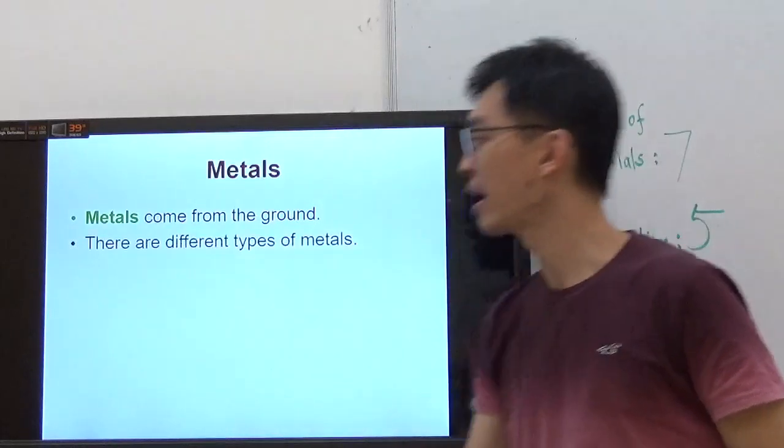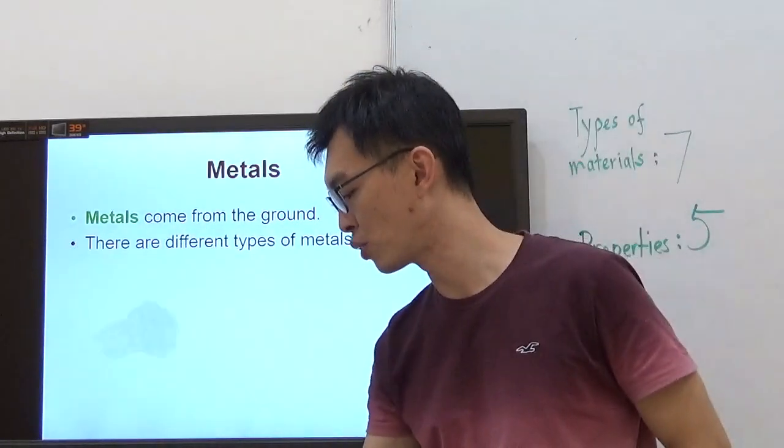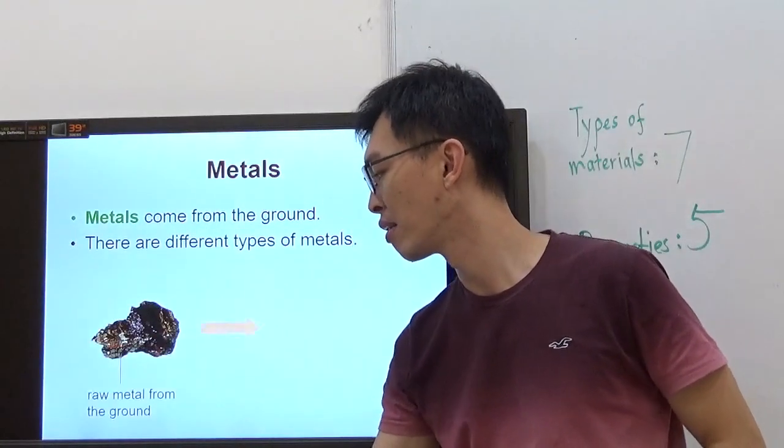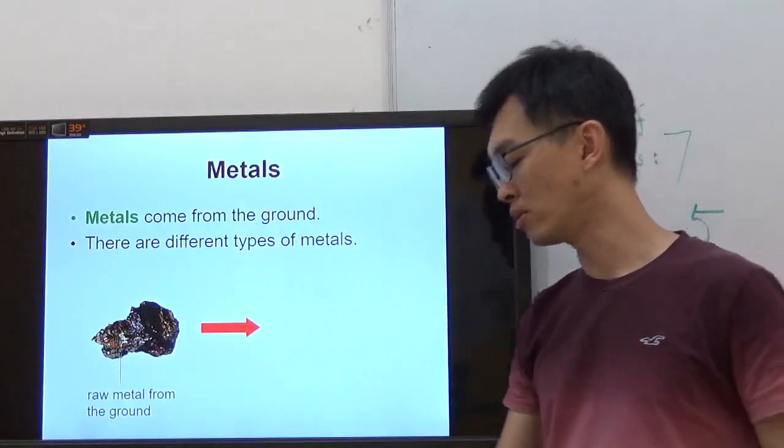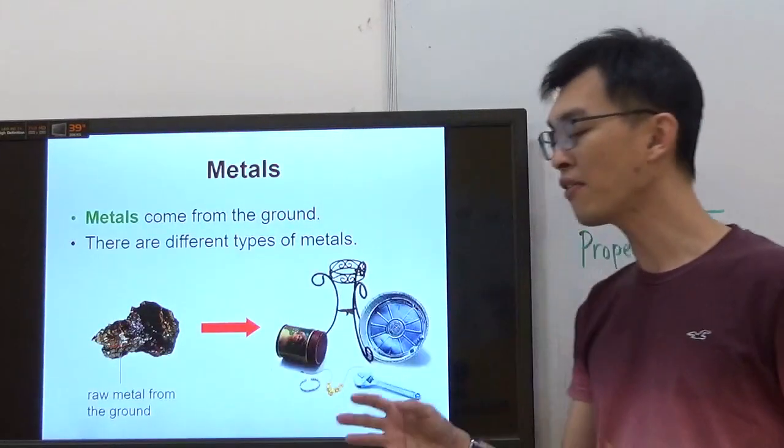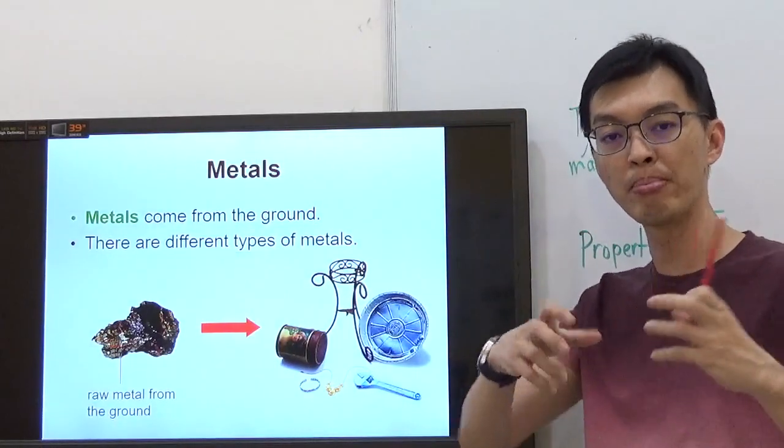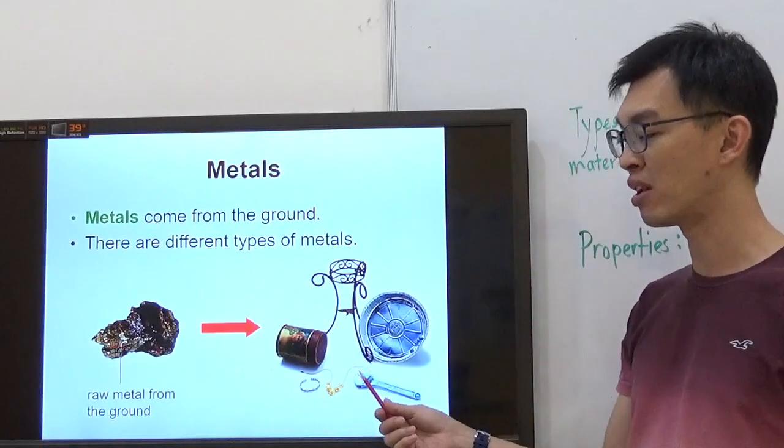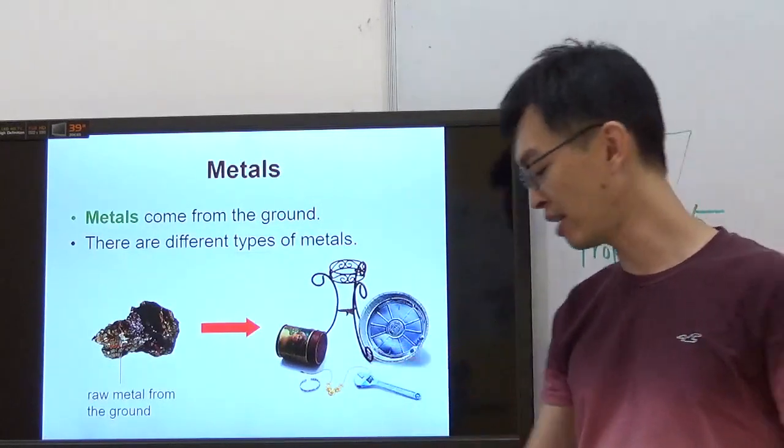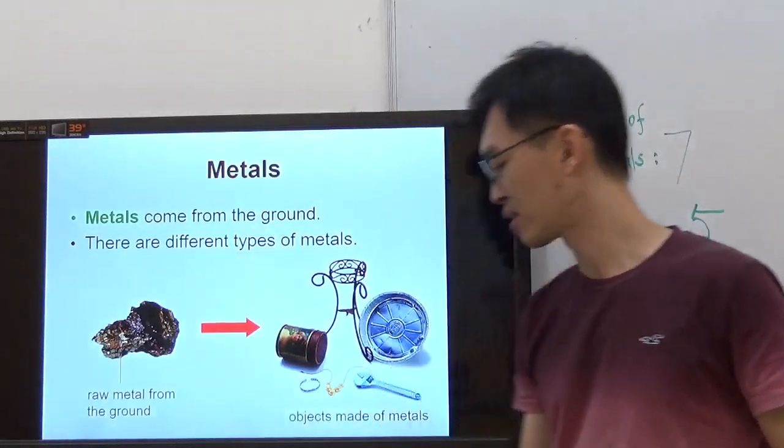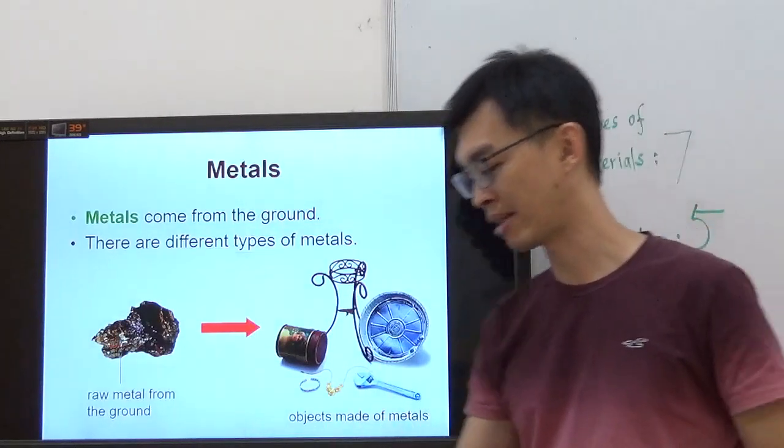Now, let's go on to the next one. There are different types of metals. Let me just show you a few examples. These are called raw metal. And after you polish them, you hammer them, you melt them, you can make them into different objects. So, objects made from metals.